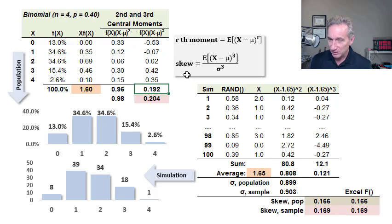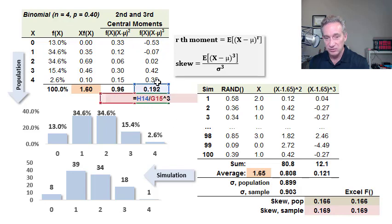So notice that the skew is not exactly the third central moment. It is standardized, we could say, by dividing by, because its units are cubed, dividing by the standard deviation cubed. And so the final step here in getting my skew for this binomial is simply to divide, take that 0.192, which is the third central moment, and divide it by, you can see here, cell G15 cubed, which is the standard deviation cubed.